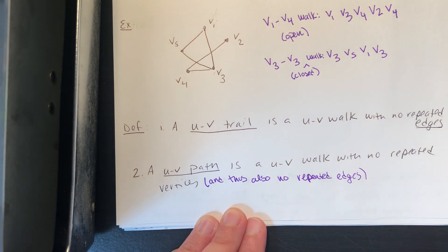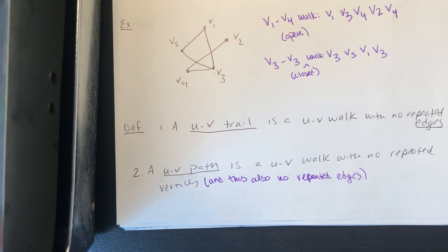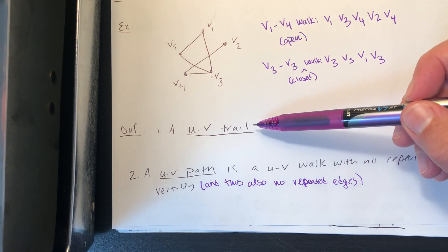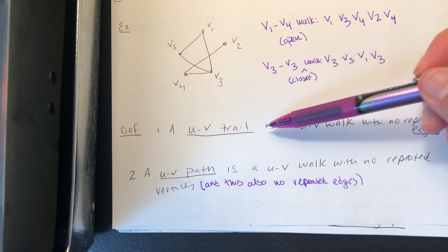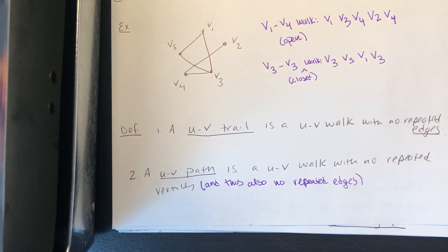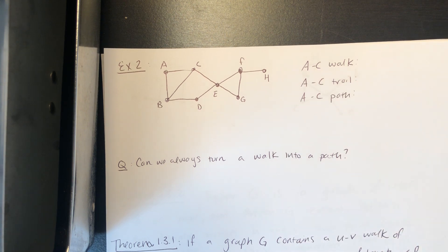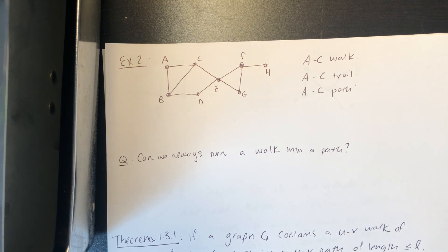Let's look at an example to understand the difference between a walk, a trail, and a path. A walk has no restrictions other than traveling along edges. A trail allows repeated vertices but not repeated edges. A path allows neither repeated vertices nor repeated edges. We'll find examples of each for an a-to-c walk on this graph.